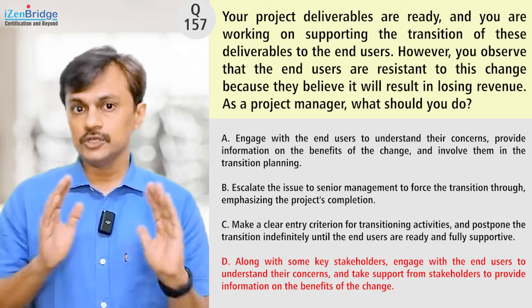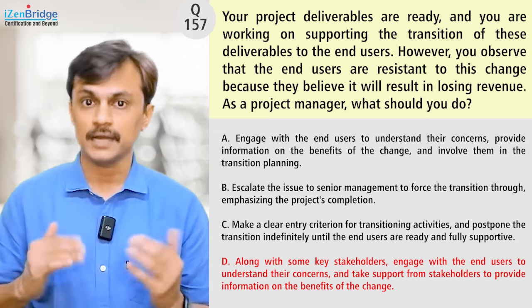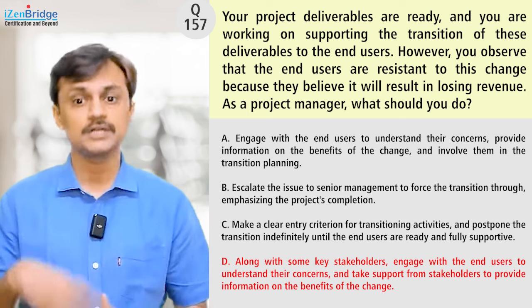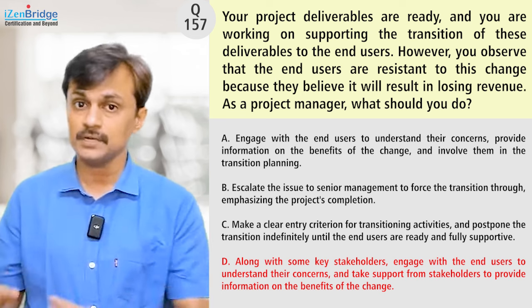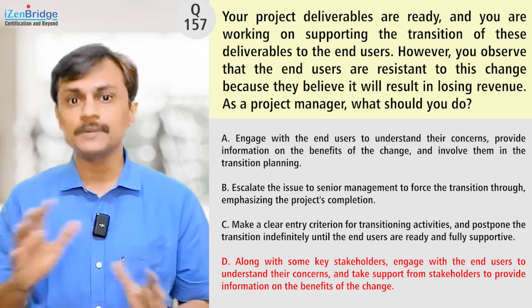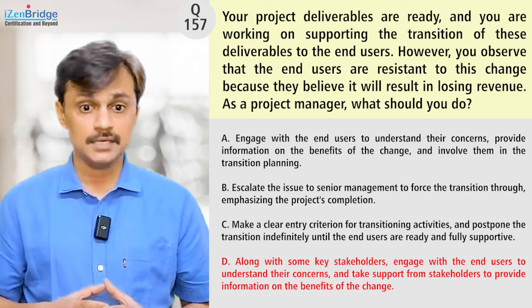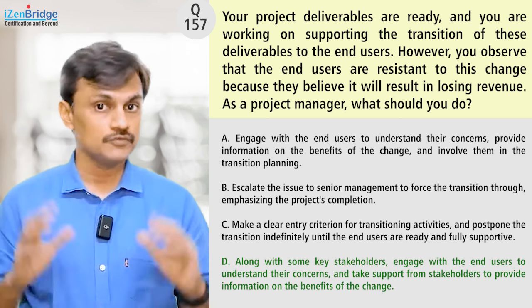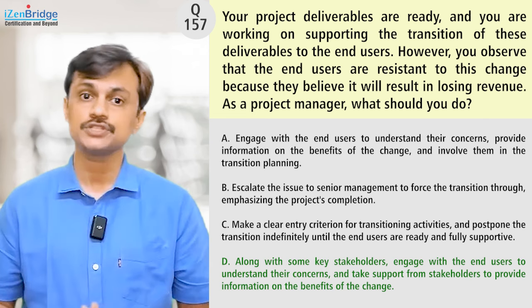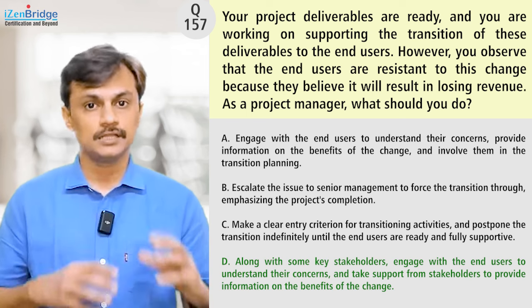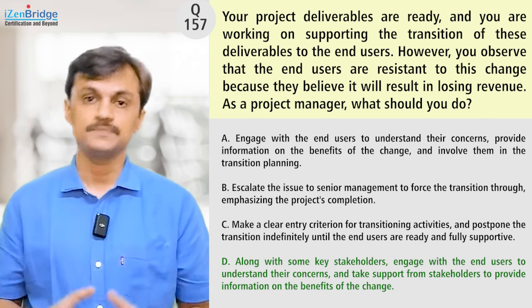Option D says you may need to take support from key stakeholders because this transitioning situation may not be directly controllable by the project manager. So, you involve those stakeholders, plan with them, and have them explain the benefits of the project and deliverable to the end users — bringing justification from them rather than you providing it alone — and then collaboratively figure out how to move forward with these transitioning activities. This is something better than A because when supporting organizational change, we are not the sole player. The rollout plan and other activities are not completely owned by the project manager; they are owned jointly by the group managing the change.